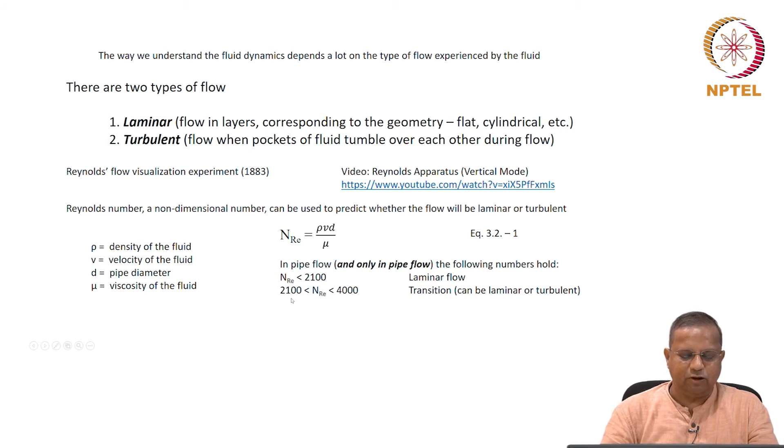If the Reynolds number is between 2100 to 4000, we really cannot say what kind of flow it is. It could be laminar, it could be turbulent and so on. So this is called the transition regime.